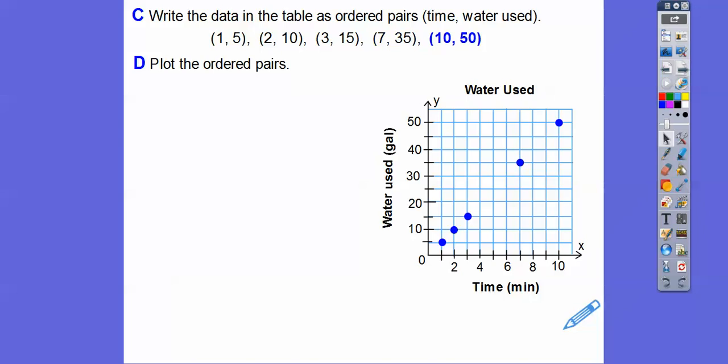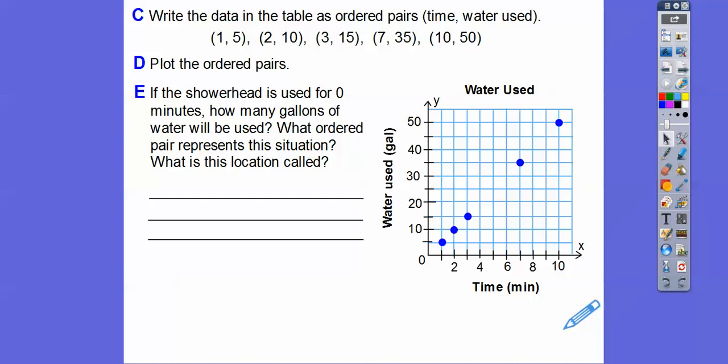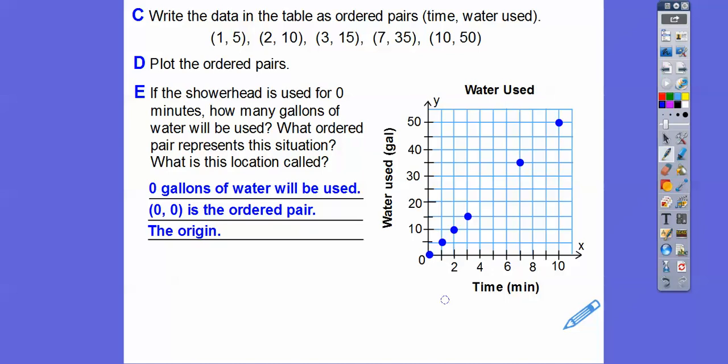These points are making a straight line — we can connect them with a straight line. That's part of proportionality: proportionality means there's a straight line, and it also means the line goes through the origin. If the showerhead is used for 0 minutes, how many gallons are used? If it's never turned on, then 0 gallons are used. The ordered pair is 0,0 — and that location is called the origin. After 0 minutes, 0 gallons is used, at the ordered pair 0,0.